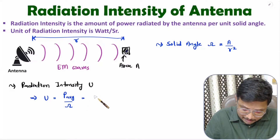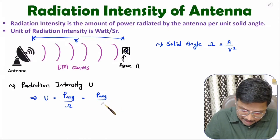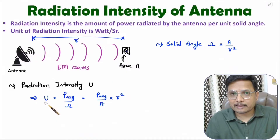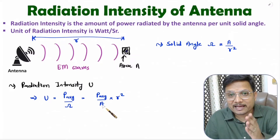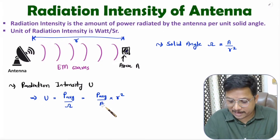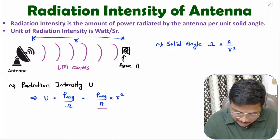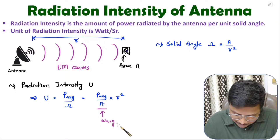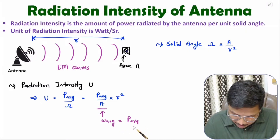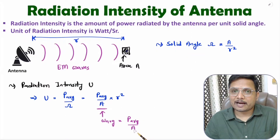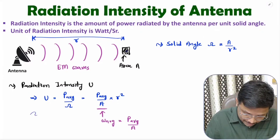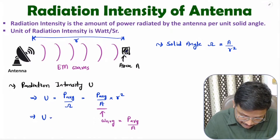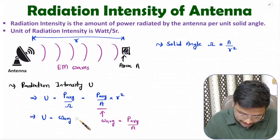If you substitute the solid angle expression, then radiation intensity equals average power divided by area times R squared. Now, average power divided by area is average power density. So substituting average power density, radiation intensity U equals average power density multiplied by the square of the distance R.